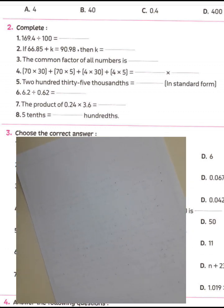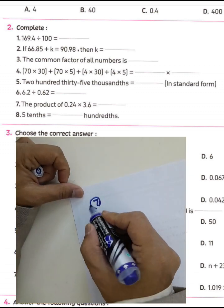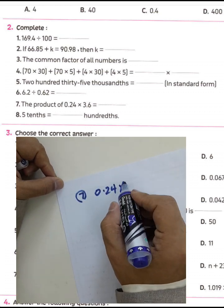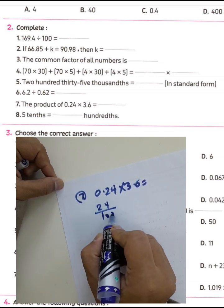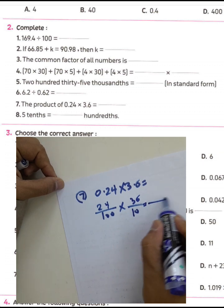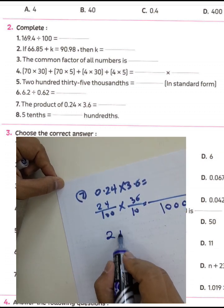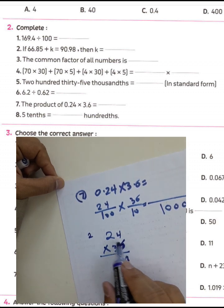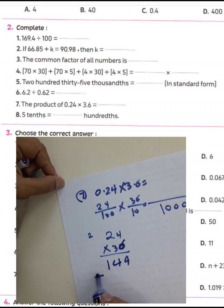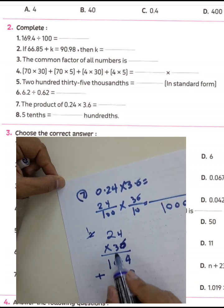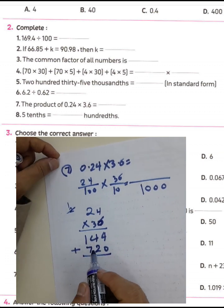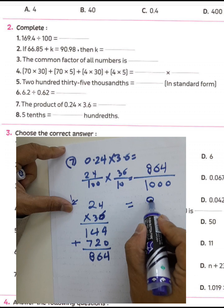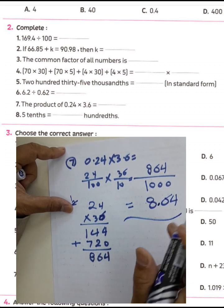Question number seven: the product of 0.24 and 3.6. We write 0.24 as 24 over 100 and 3.6 as 36 over 10. Multiplying the denominators: 10 times 100 equals 1,000. Then we multiply 24 by 36: 4 times 6 equals 24, write 4 and carry 2; 2 times 6 equals 12, plus 2 equals 14; 3 times 4 equals 12, write 2 carry 1; 2 times 3 equals 6 plus 1 equals 7. The result is 864. So we write 864 over 1,000, and place the decimal point after two places, giving 0.864.